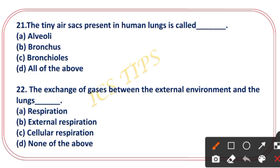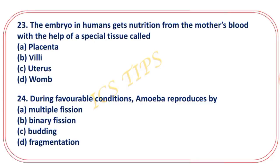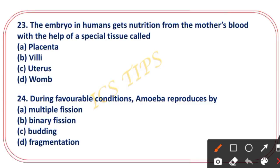The tiny air sacs present in human lungs are called alveoli. The right answer is option A — alveoli. There are approximately 500 million alveoli present in human lungs. The function relates to external respiration.